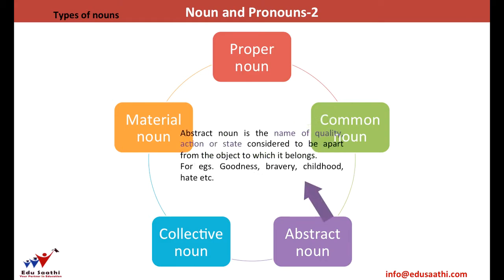Abstract nouns: abstract means anything that can only be felt. It cannot be touched. It cannot be seen. Such things are abstract things, and the names given to such things are known as abstract nouns. For example, goodness or bravery. The stories of the bravery of military men are often told to us. Bravery can only be felt or imagined — it cannot be seen, it cannot be touched, it has no form. Thus bravery becomes an abstract noun.